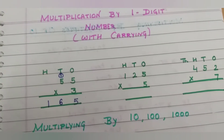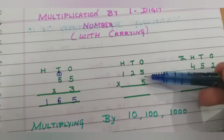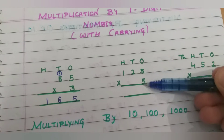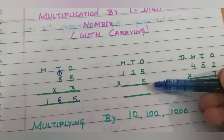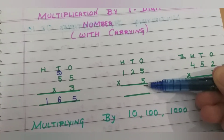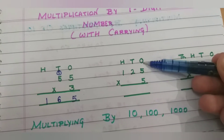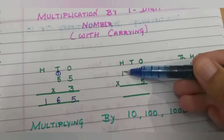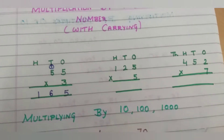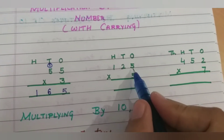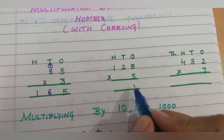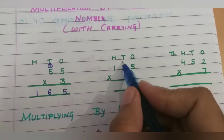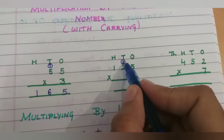Let's see the next example. Here also we have to multiply by a one digit number, that is five. First we will multiply the ones, then tens, and then hundreds. At the ones place we have five. Five fives are twenty-five. Five we will write here and two will be carry.